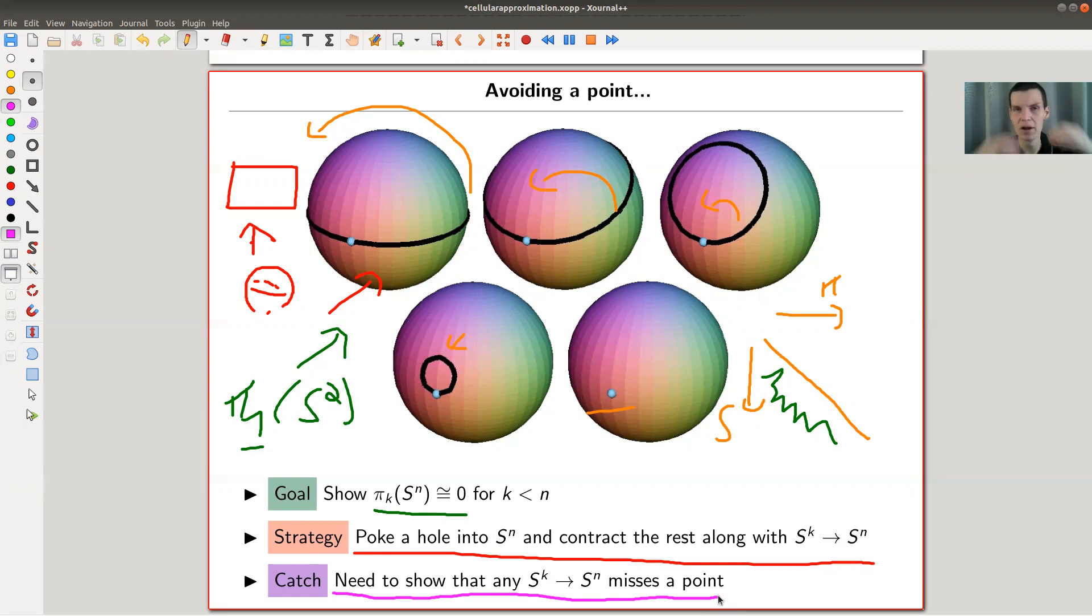I kind of poke my hole, pull off the sphere, and I'm good to go. Again, I just proved that π_1 of S^2 is trivial. And then generally we'd prove that π_k of S^n would be trivial as long as k is small enough.